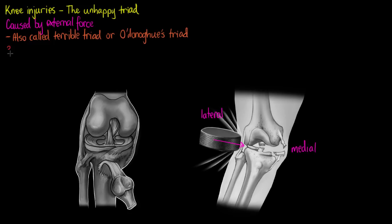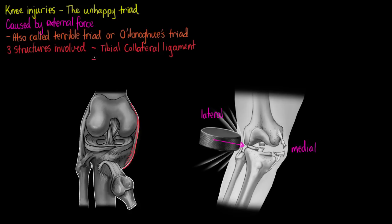The first structure is our tibial collateral ligament, which is on the medial surface of our knee. It's on the medial aspect, and we've got this tibial collateral ligament running there. It's going to be injured along with the medial meniscus, which is attached to our tibial collateral ligament.